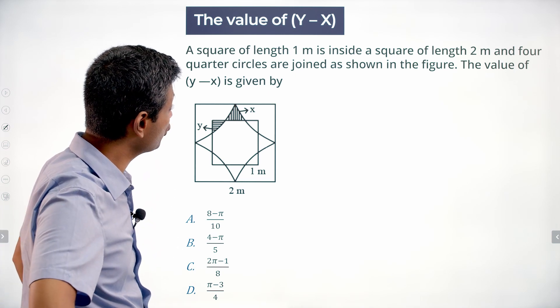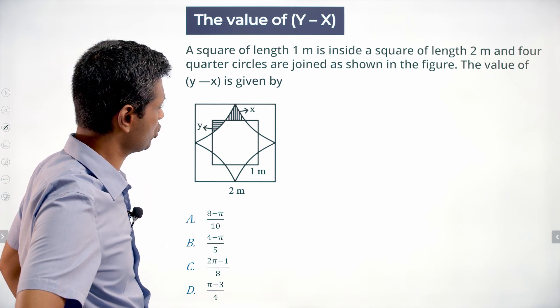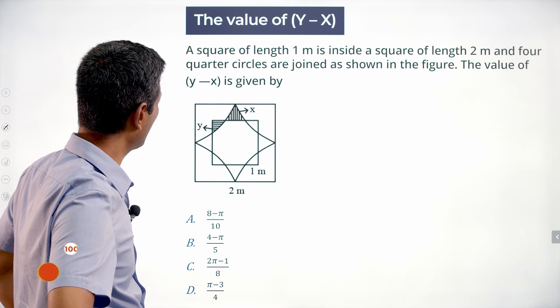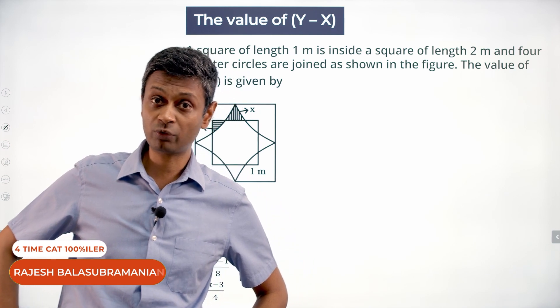A square of length 1 meter is inside a square of length 2 meters, and four quarter circles are drawn as shown in the figure. The value of y minus x is given by... some fabulous, really tough question.